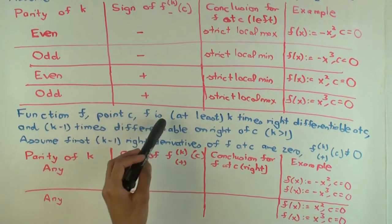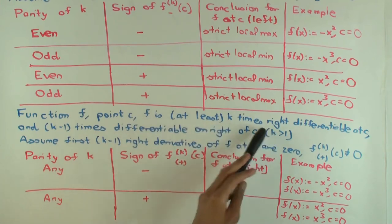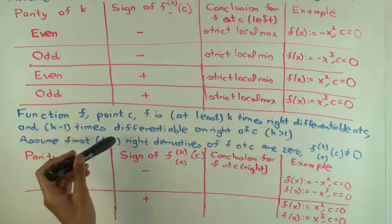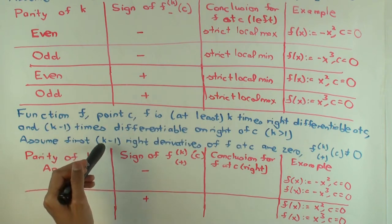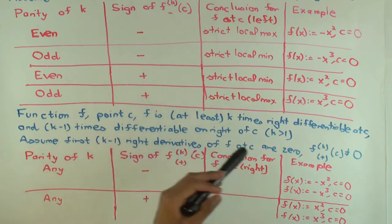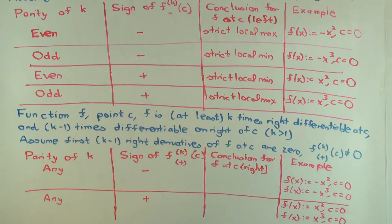So you have a function, you have a point in the domain. The function is k times right differentiable at the point, and k minus one times differentiable on the right of the point. The first k minus one right derivatives at the point are zero, and the kth right derivative at the point is non-zero.